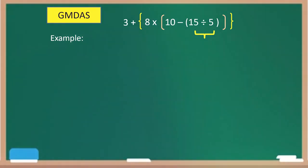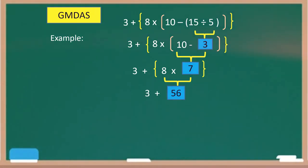So we have 15 divided by 5, you have 3. Bring down all the numbers that we did not use: 10, 8, and 3. What will be the next operation to be done? Yes, the next operation to be done is the operation inside the brackets. 10 minus 3, you have 7. Bring it down again, 8 and 3. Still, we have to work on the operation inside the braces, which is 8 and 7. So 8 times 7, you have 56. Plus 3, you have 59.